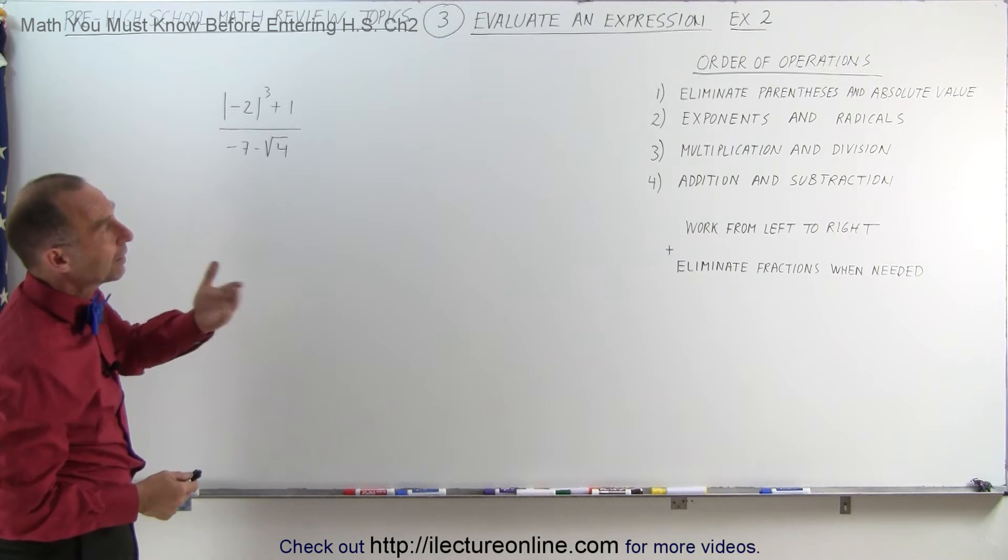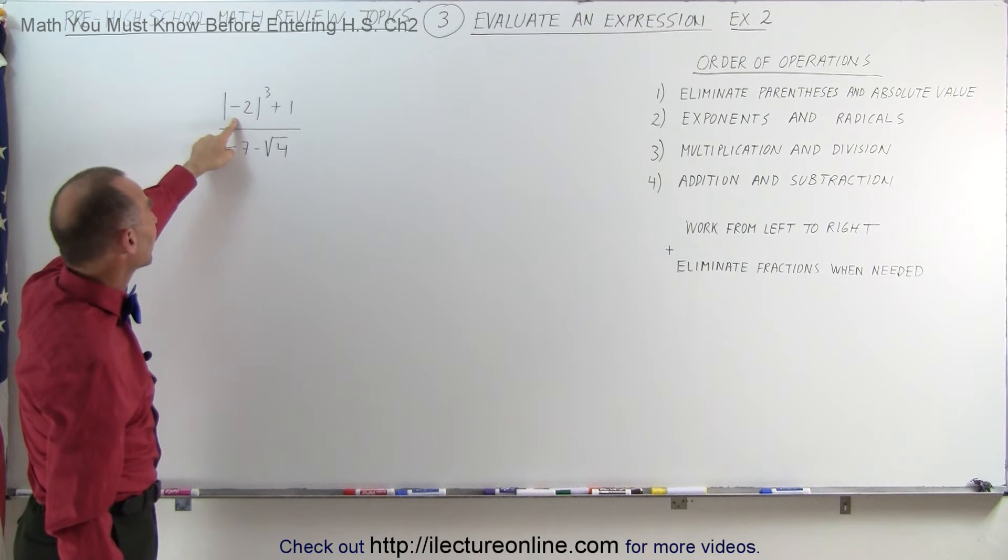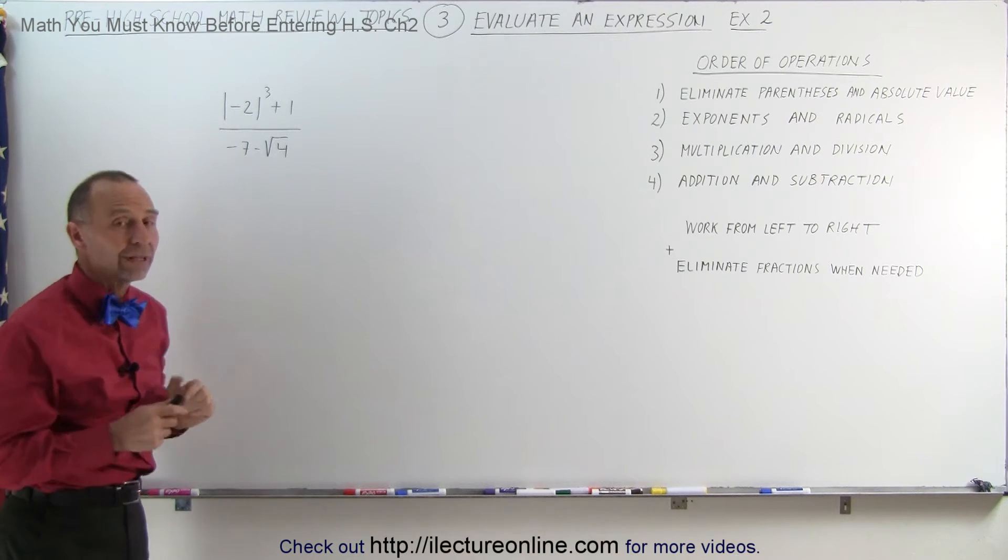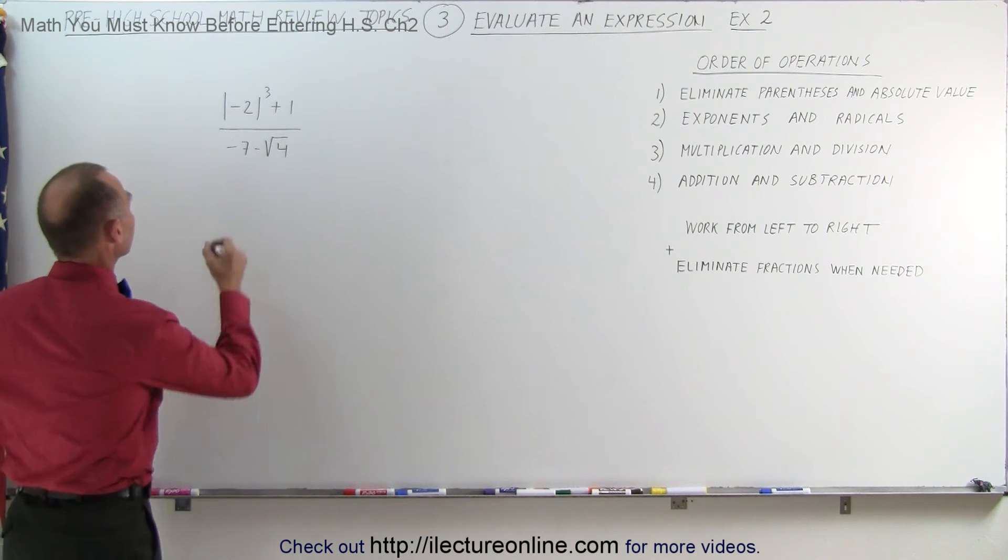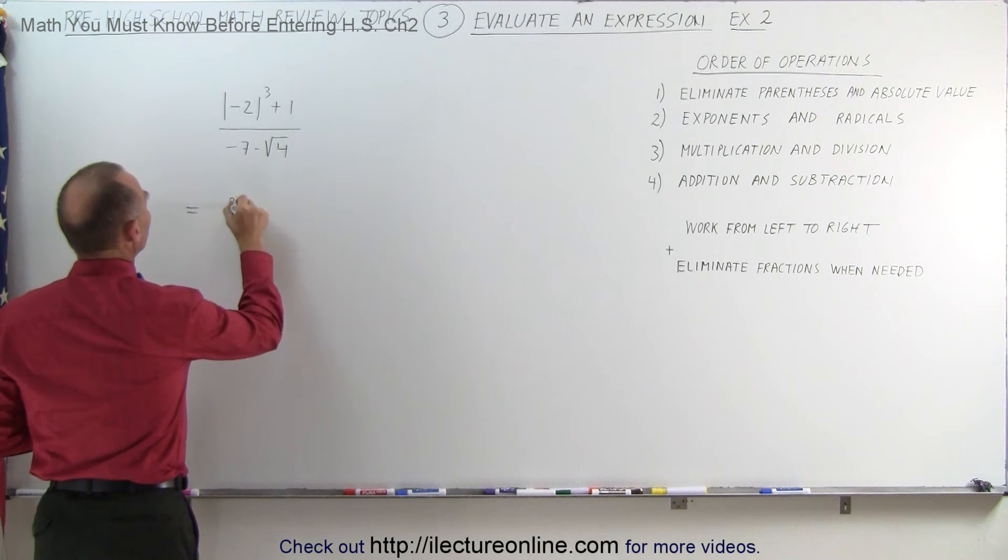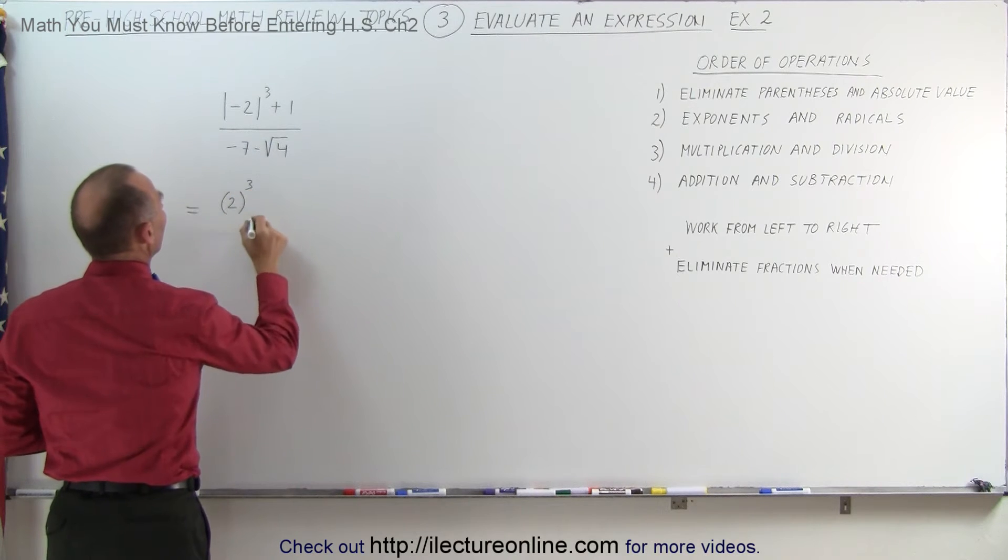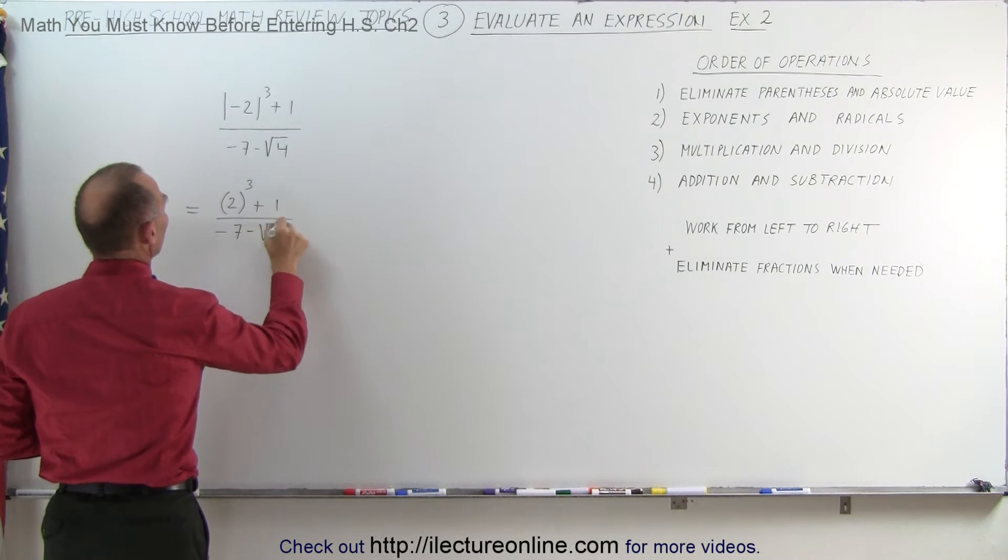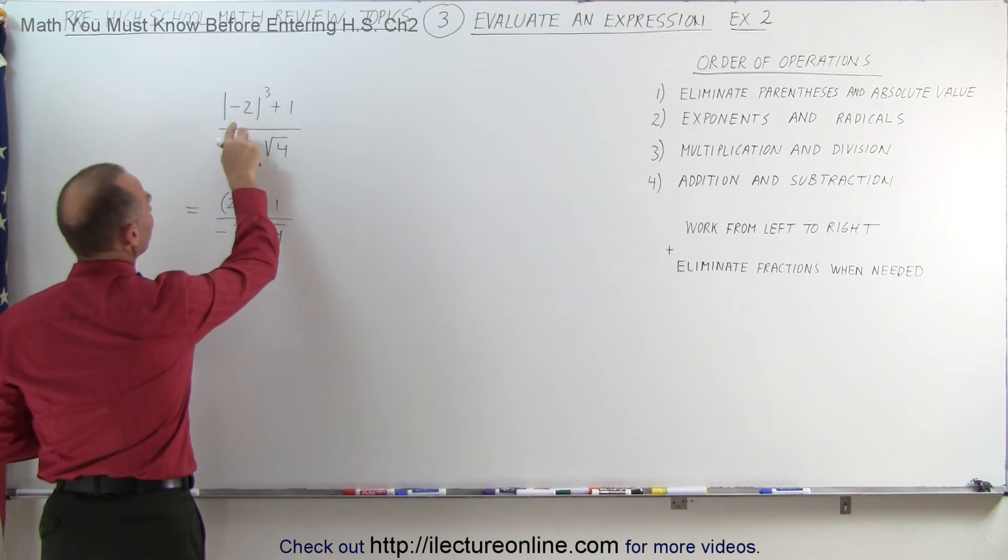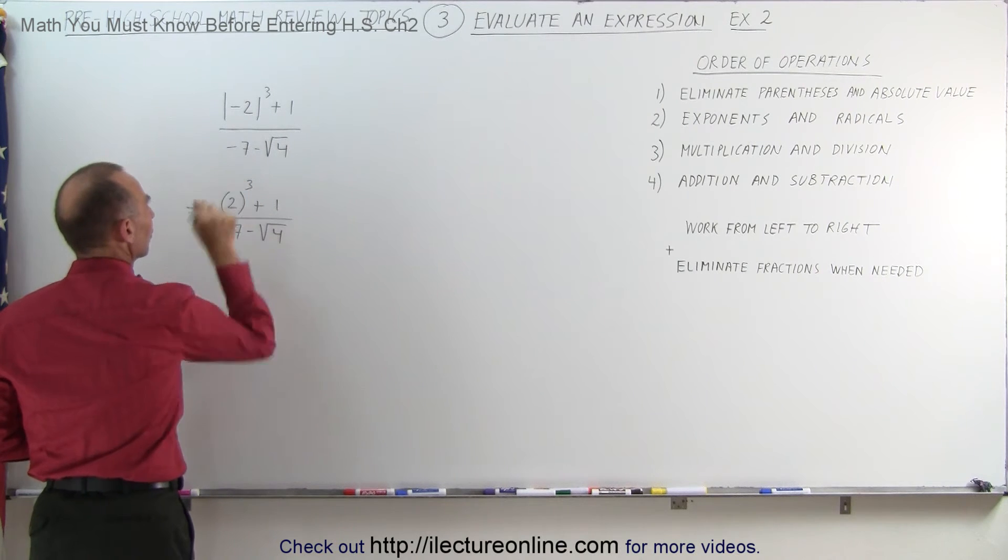First of all, we want to eliminate parentheses and absolute value symbols. We have one up here at the top, the quantity minus 2 inside the absolute value symbol, so let's first get rid of those symbols and make that into a positive 2. This is equal to a positive 2. I'm going to put parentheses around it, raised to the third power, plus 1, divided by minus 7, minus the square root of 4. So notice, the absolute value of a negative 2 is equal to a positive 2, which is now raised to the third power.